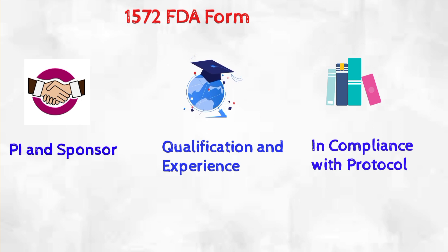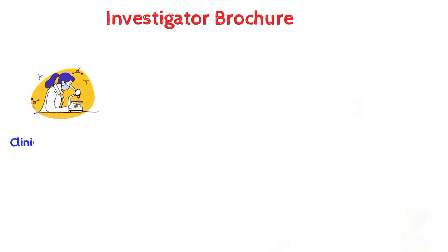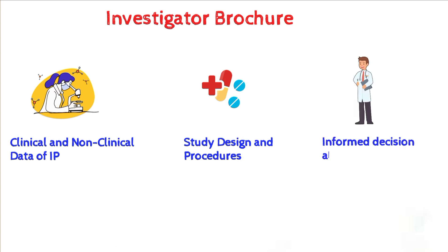Coming to the next essential document — the Investigator Brochure. It is a comprehensive guide containing both clinical and non-clinical data related to the investigational product (IP) that is going to be used in the clinical trial. It contains important information about the IP as well as information on the study design, procedures and patient population. The Investigator Brochure helps investigators to understand the study drug and to make informed decisions about the trial.